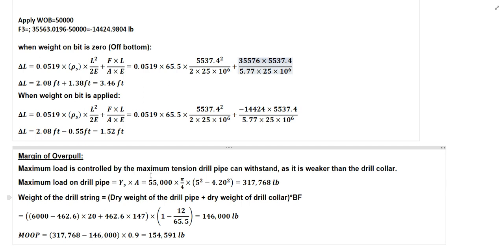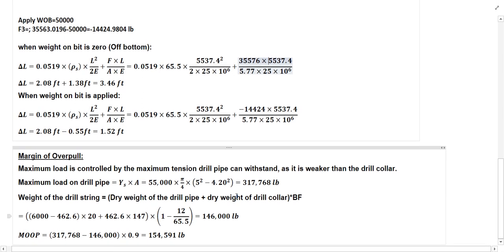The dry weight of the drill pipe is (6,000 minus 462.6) multiplied by the linear weight of the drill pipe, 20 lb/ft. Plus the drill collar length 462.6 multiplied by the linear weight of the drill collar, 147 lb/ft. This is multiplied by the buoyancy factor, which is one minus twelve divided by sixty-five point five. Now with the weight of the drill string and the maximum load on the drill pipe, the margin of overpull equals the maximum load on the drill pipe minus the weight of the drill string (wet condition), multiplied by the safety factor of 90%.